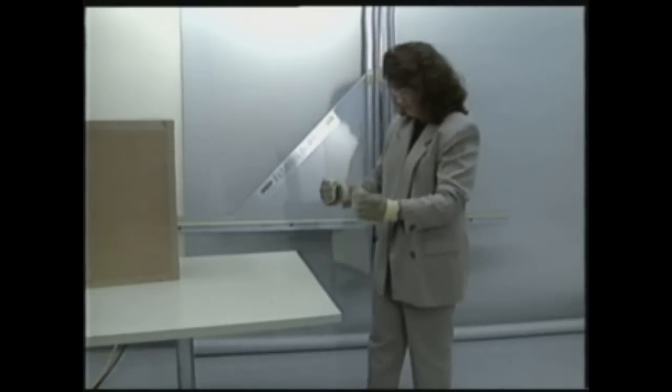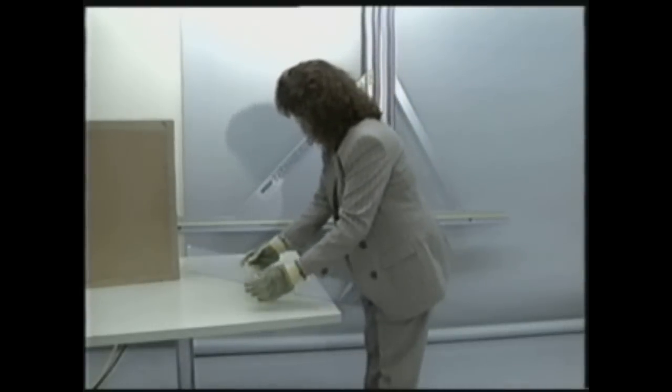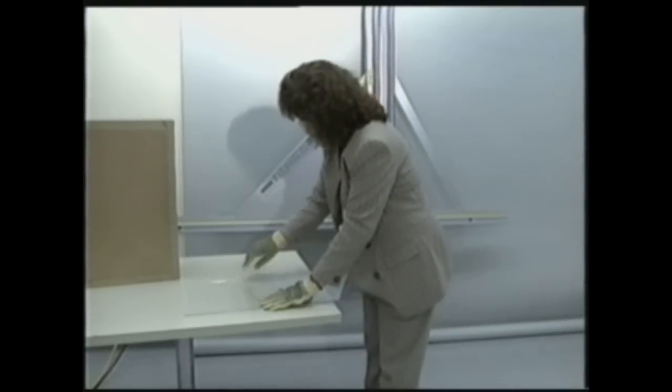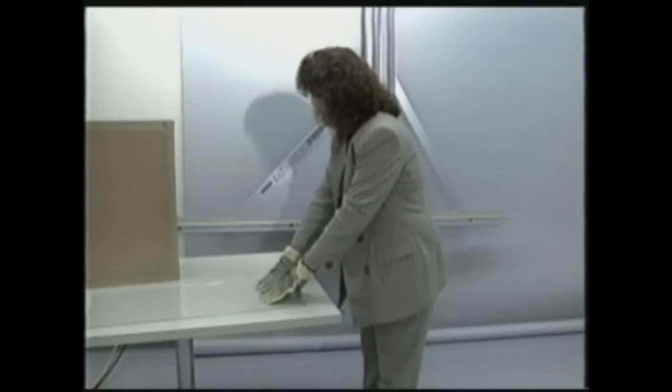When you lay a large piece on a table, hold the glass against the edge of the table and rotate it down flat. You can then slide it away from the edge. Unexpected breakage generally occurs from bending or bumping the glass edge against a hard object.